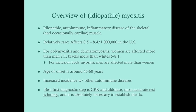The first two diseases are polymyositis and dermatomyositis, and they're very similar. Women are affected more than men by about a two-to-one ratio. Blacks are affected more than whites by a five-to-eight-to-one ratio, which lends credibility to a genetic component. For inclusion body myositis, men are affected more than women - that's different. The age of onset is around 45 to 60 years, so you'll see this in older middle-aged patients.